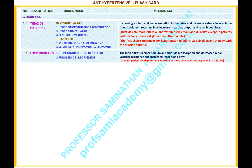Classification 1.2: Loop diuretics. Drugs under this classification: 1. Bumetanide, 2. Ethacrynic acid, 3. Furosemide, 4. Torsemide. Mechanism of loop diuretics: they block sodium and chloride reabsorption and decrease renal vascular resistance and increase renal blood flow. Used for patients with poor renal function or those who have not responded to Thiazide.